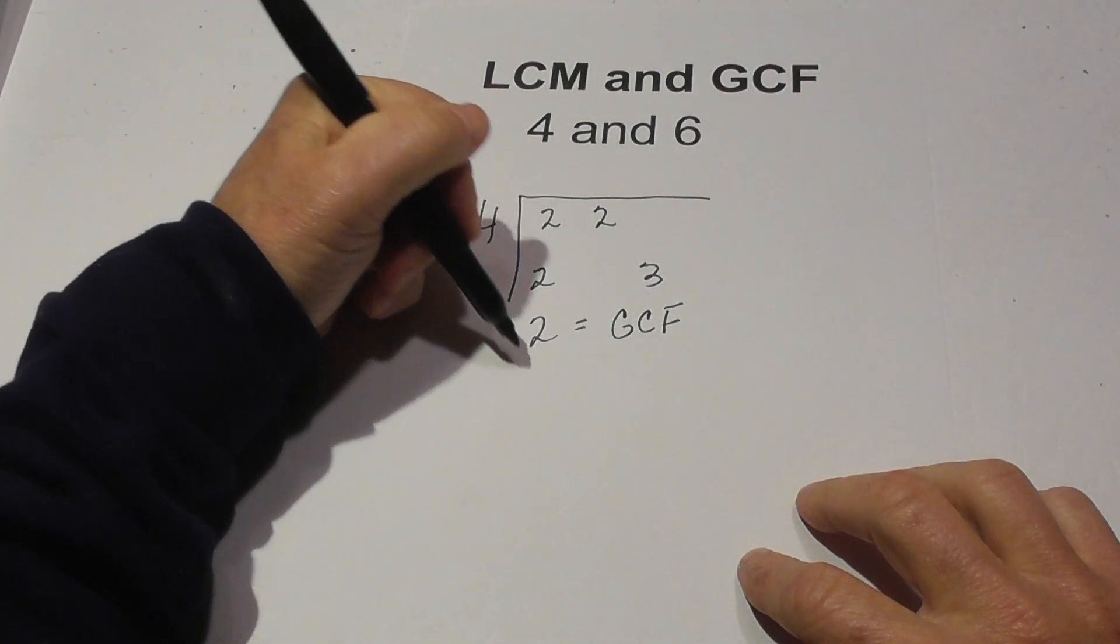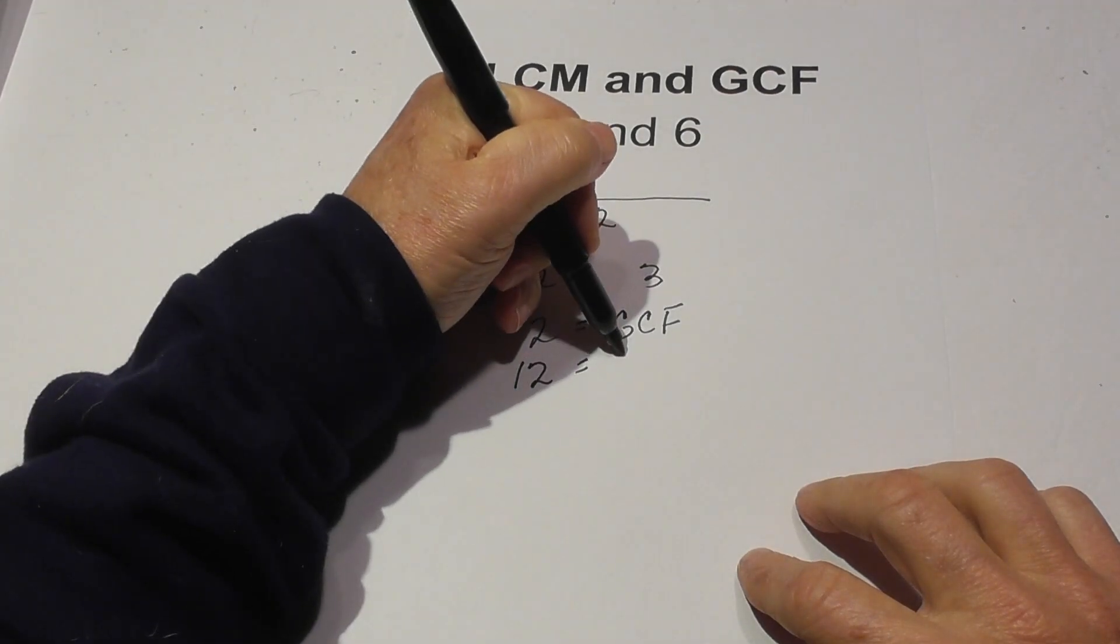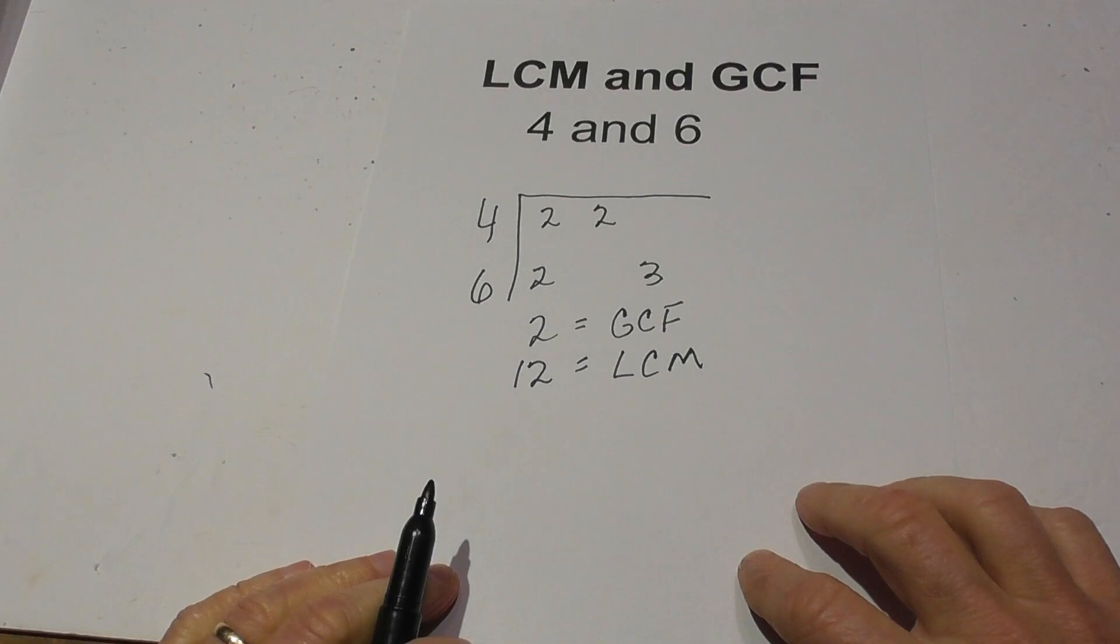So in summary two is the greatest common factor and then we had 12 equals the LCM. I hope that was helpful.